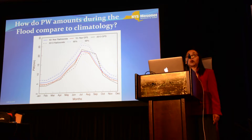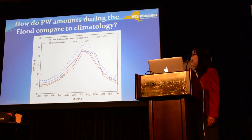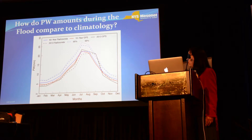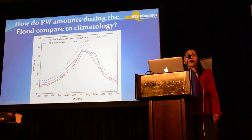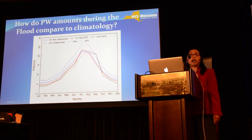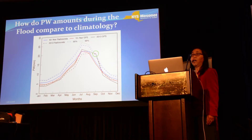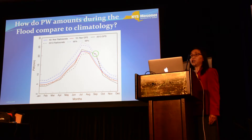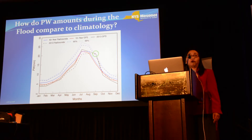How does this water vapor feature compare with climatology? What I show here is the seasonal variability of PW in the Boulder area — the black, blue, and red lines are the 10-year or 40-year climatology from radiosonde and GPS. The black line is September 2013, which is 30 percent above climatology and above the 99th percentile of water vapor. You can see how much water vapor was present for this event.